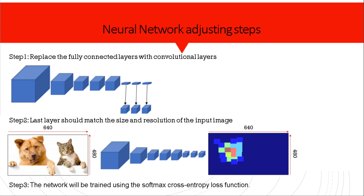The first step is to replace the fully connected layers with convolutional layers. The second step is replacing the last layer so that it matches the size and resolution of the input image — for example, an input of 640 by 480 produces an output of the same size. The third step is training the network using the softmax cross-entropy loss function, calculated in a pixel-wise manner between the predicted output and the ground truth label. So here we are comparing two images, not just labels.